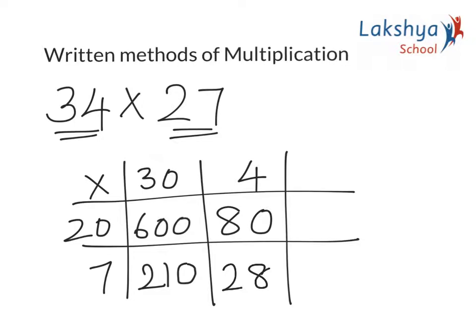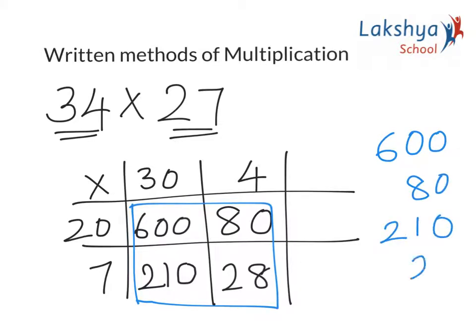7 × 4 gives me 28. Now we need to add up all these numbers. So we can do it either vertically or horizontally. So let's list it vertically. 600 plus 80 plus 210 plus 28. So let's add it up. We get 8, and 2 gives me 10, plus 1 is 11. 6 and 1 is 7, plus 2 is 9. The answer here is 918.